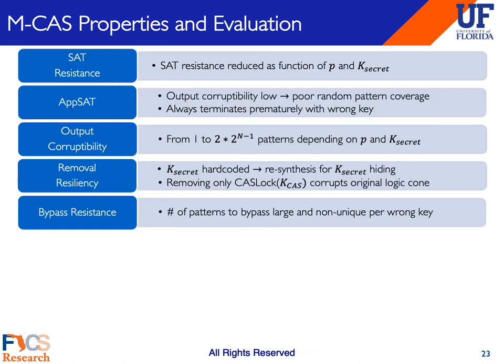This table briefly summarizes the security properties of MCAS. SAT-attack resistance now depends on the output corruptibility of the circuit, which is determined by the output-1-count B as well as the choice of the secret key K-secret embedded into the original netlist. These two factors also determine the output corruptibility. APSAT-attack resistance is ensured as the attack has no guarantees of terminating with a correct or almost correct key. Removal attack resistance is ensured due to the CasLock block embedded into the original circuit with K-secret. And finally, bypass attack resistance is inherited from CasLock.